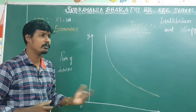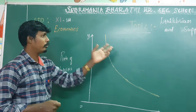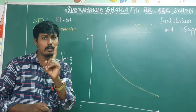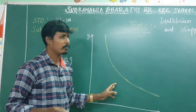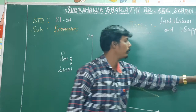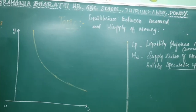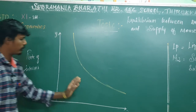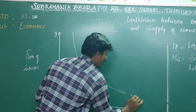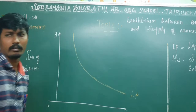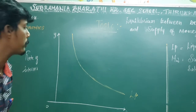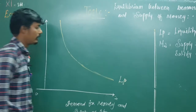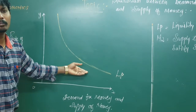In the last video, we discussed the equilibrium between demand and supply of money, with one supply curve M2 shown in one diagram. Now in this video, we are also going to look at the diagram for LP — that means liquidity preference — which is another name for the demand curve.